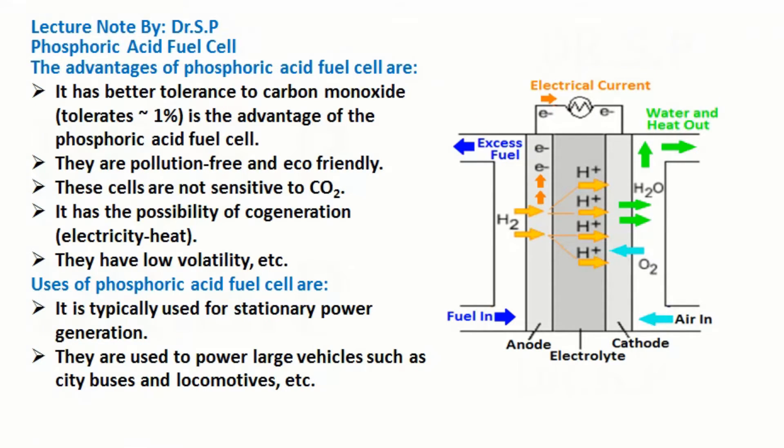Uses of Phosphoric Acid Fuel Cell are: it is typically used for stationary power generation. They are used to power large vehicles such as city buses and locomotives.